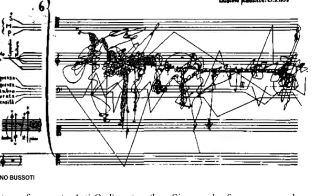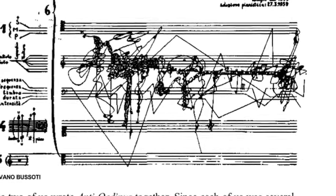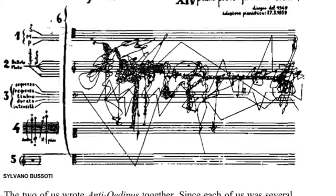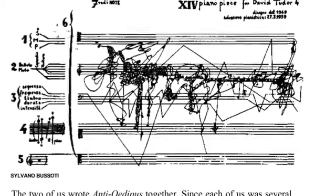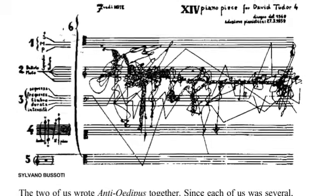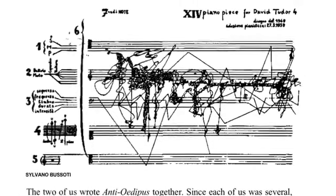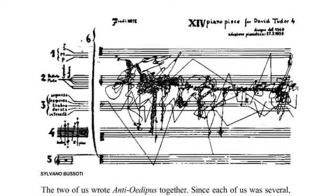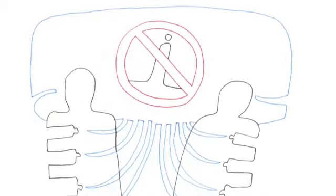The two of us wrote Anti-Oedipus together. Since each of us was several, there was already quite a crowd. Here we have made use of everything that came within range, what was closest as well as farthest away. We have assigned clever pseudonyms to prevent recognition. Why have we kept our own names? Out of habit. Purely out of habit.